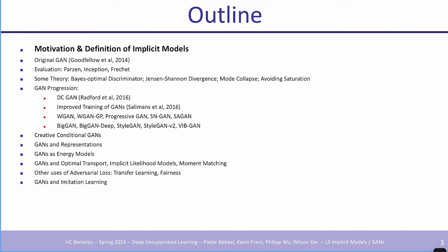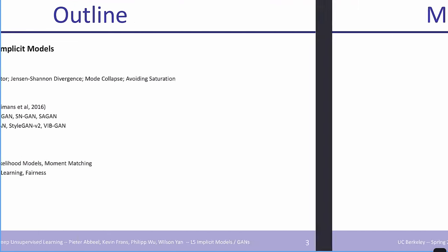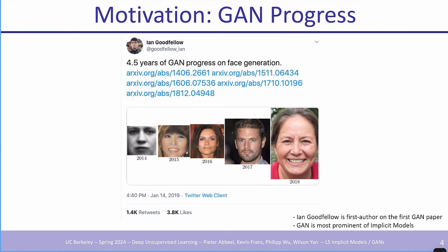Today we're going to look at implicit models and generative adversarial networks. This is a tweet from a few years ago. Ian Goodfellow, the inventor of GANs, tweeted this to showcase the rapid progression in quality of samples generated by GAN models. GANs started in 2014, and just four years later, by 2018, there was much higher resolution and much higher quality generation.